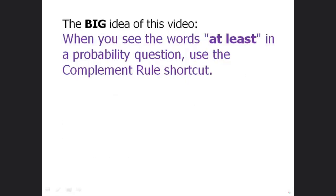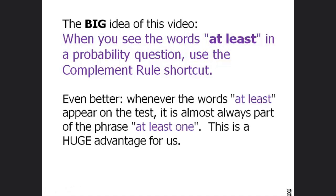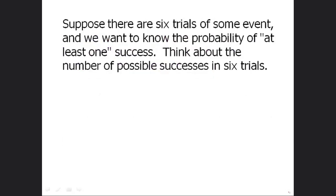Here's the big idea: when you see the words 'at least' in a probability question, use the complement rule as a shortcut. Whenever the words 'at least' appear, it is almost always part of the phrase 'at least one.' Suppose there are six trials — we're rolling six dice, flipping six coins, something like that — and we want to know the probability of at least one success.